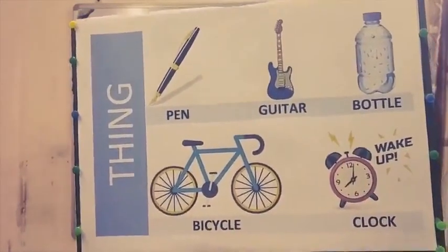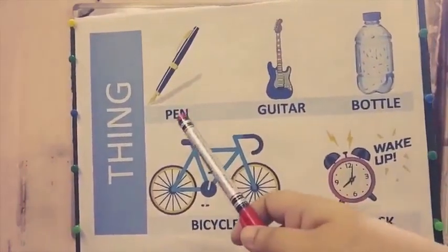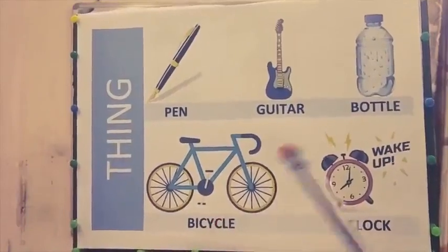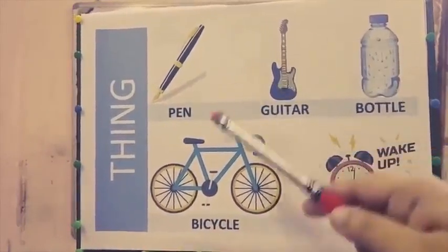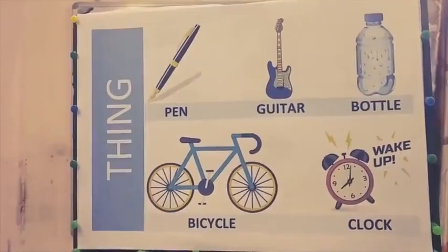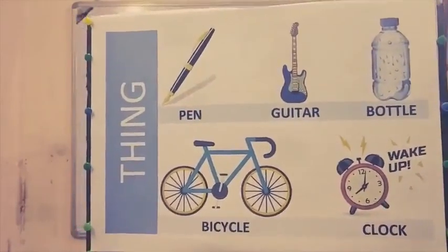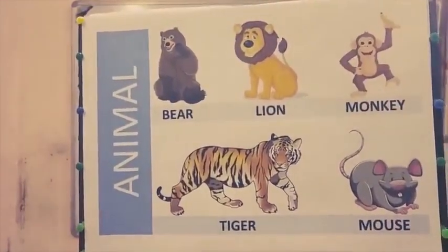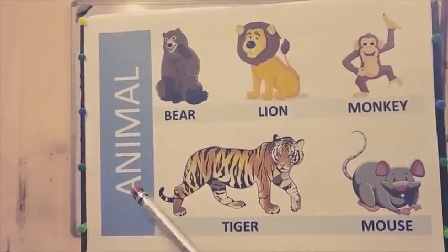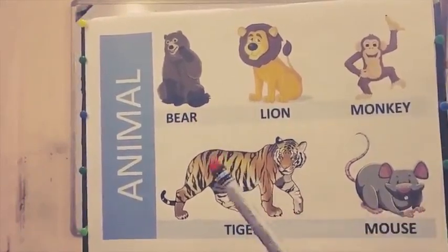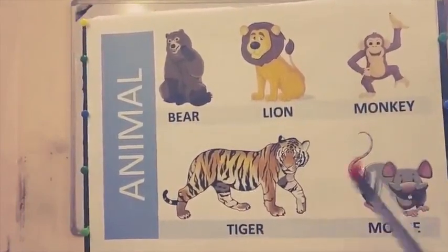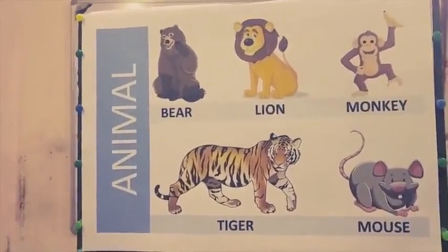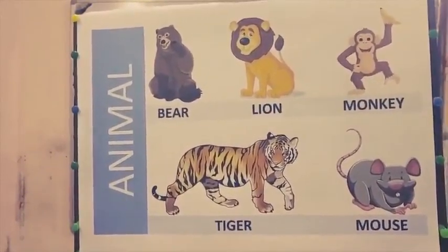This is the third category of a noun. Like pen, guitar, bottle, bicycle, clock — these are all things which come into the category of non-living. This is the fourth category: animal. Names of different animals like bear, lion, monkey, tiger, mouse — they are all names of animals.